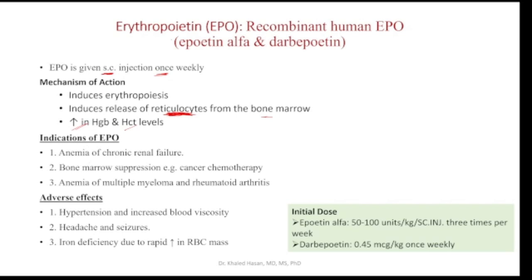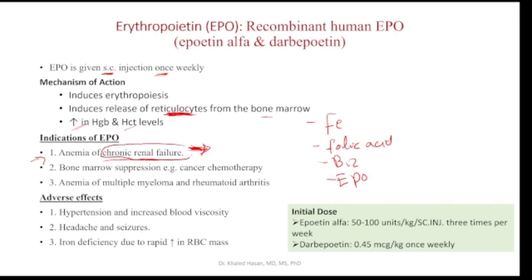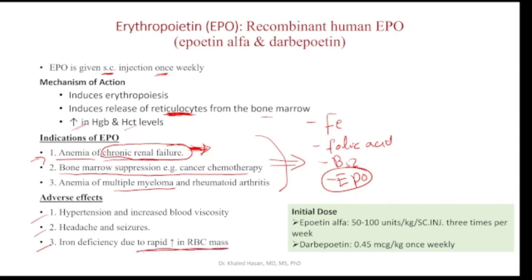The clinical uses of erythropoietin or epoetin include anemia associated with chronic renal failure — so if a patient has a history of chronic renal failure, you would prescribe EPO rather than Fe, folic acid, or B12. Other uses include bone marrow suppression due to cancer treatment and anemia of multiple myeloma. Some patients may suffer from hypertension, headache, or iron deficiency due to the rapid increase in red blood cell mass with this therapy.